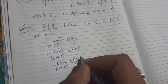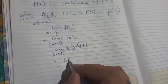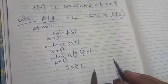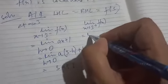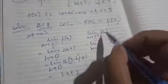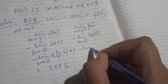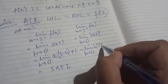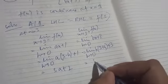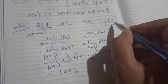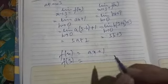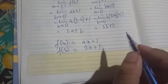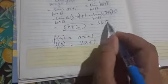For the right hand limit, limit x tends to 3 plus f(x), limit h tends to 0, the function for x greater than 3 is bx + 3, giving b(3 + h) + 3, so the right hand limit is 3b + 3. At x = 3, the function is ax + 1, so f(3) = 3a + 1.